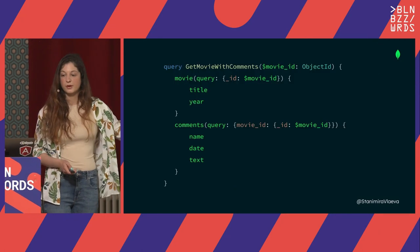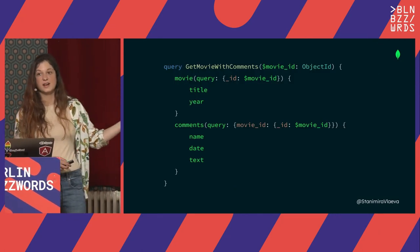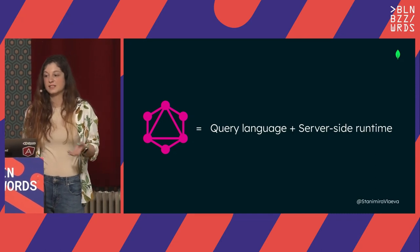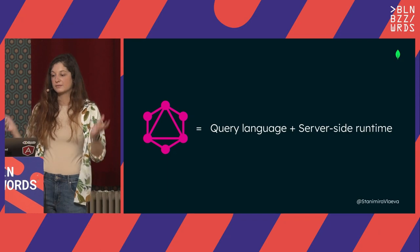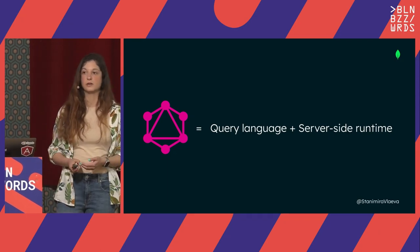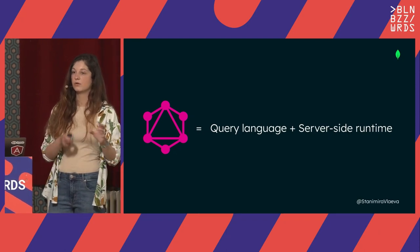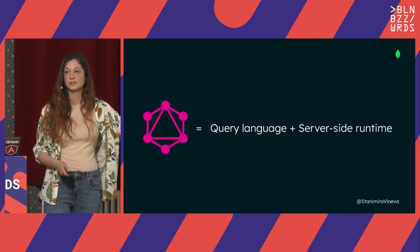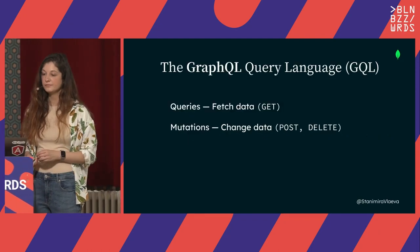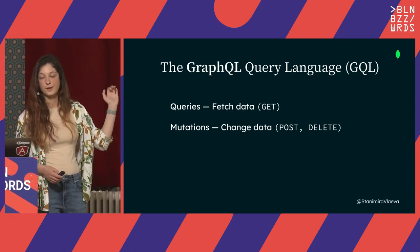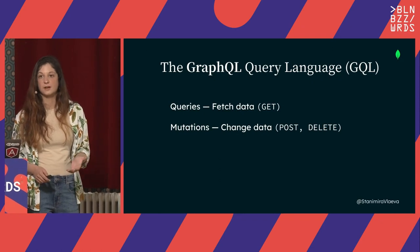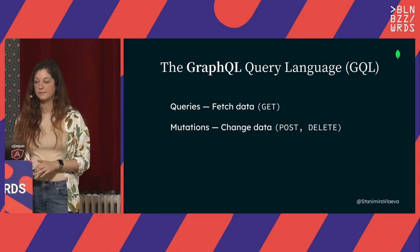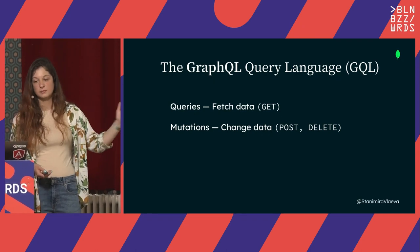What exactly is GraphQL? GraphQL is actually a specification — not a set library or a single technology. It is a specification that you can implement yourself. GraphQL refers to two things: the query language, GQL or GraphQL query language, and the server-side runtime that understands how to execute these queries. The GraphQL query language has queries that allow you to fetch data and mutations that allow you to change data. It also has subscriptions — but we won't discuss those today. Basically: queries get, mutations change data.